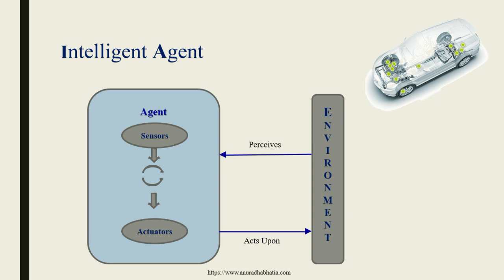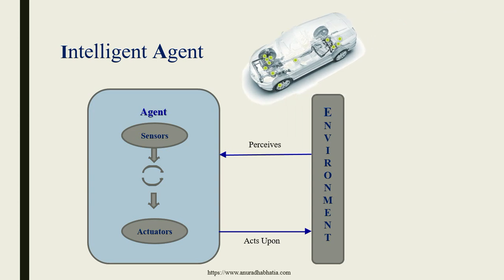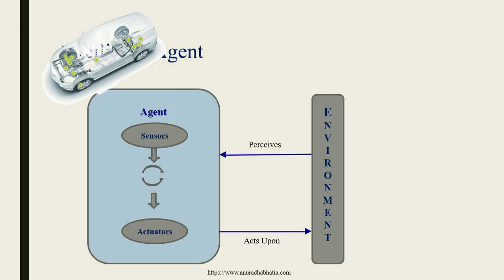Let's see how this actually works with an example of a smart car or a self-driven car. The blinking things you can see are its sensors. The complete body is the agent — the car. The environment is everything encountered while driving. The sensors perceive what is happening in the environment, and when there are no obstructions, the sensors don't get any signal, so the actuators don't respond and the car moves smoothly.